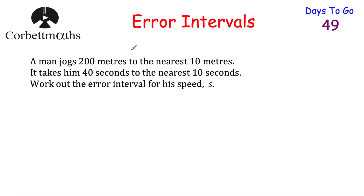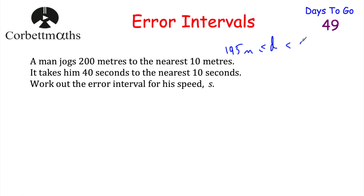Our next question says a man jogs 200 metres to the nearest 10 metres and it takes him 40 seconds to the nearest 10 seconds. Work out the error interval for his speed s — press pause now to try this. Let's look at the distance first: 200 metres to the nearest 10 metres. The distance is greater than or equal to 195 metres, because anything below that rounds down to 190. It goes up to but not including 205 metres — for instance 204.99 rounds down to 200.